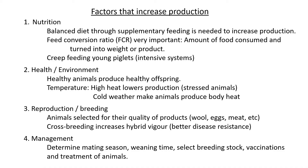Secondly, health and environment are very important and can either increase or decrease production. Healthy animals produce healthy offspring, so you want animals to be as healthy and happy as possible to reproduce and produce product. Temperature is especially important — high heat lowers production because animals become stressed, drink excessive water, and produce less. Cold weather is also problematic because animals use feed to generate body heat instead of producing products.